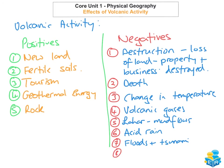The eighth and last negative impact would be the loss of trade and livelihood. Lots of businesses and livelihoods are completely destroyed. An example of this would be Mount St. Helens, which destroyed over 10 million trees and destroyed lots of homes and businesses.